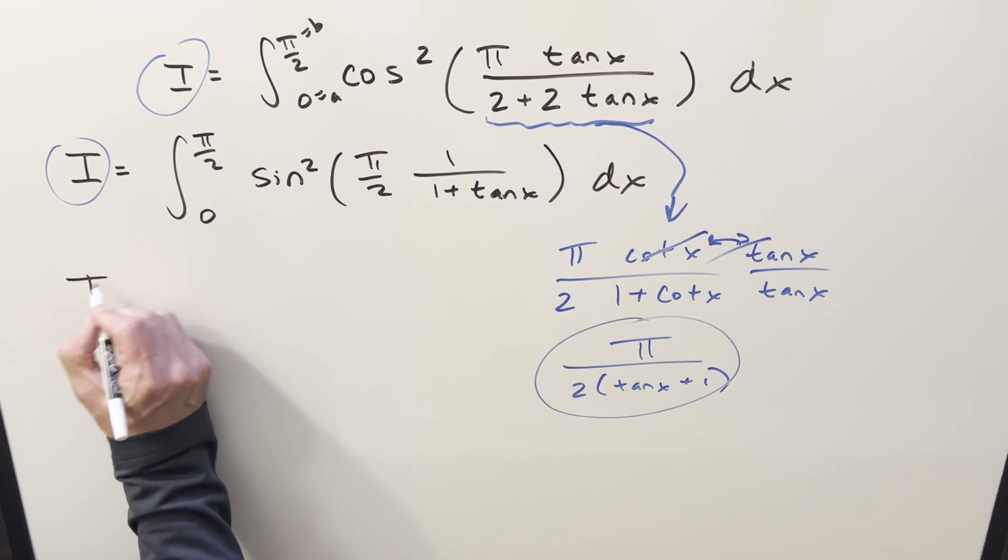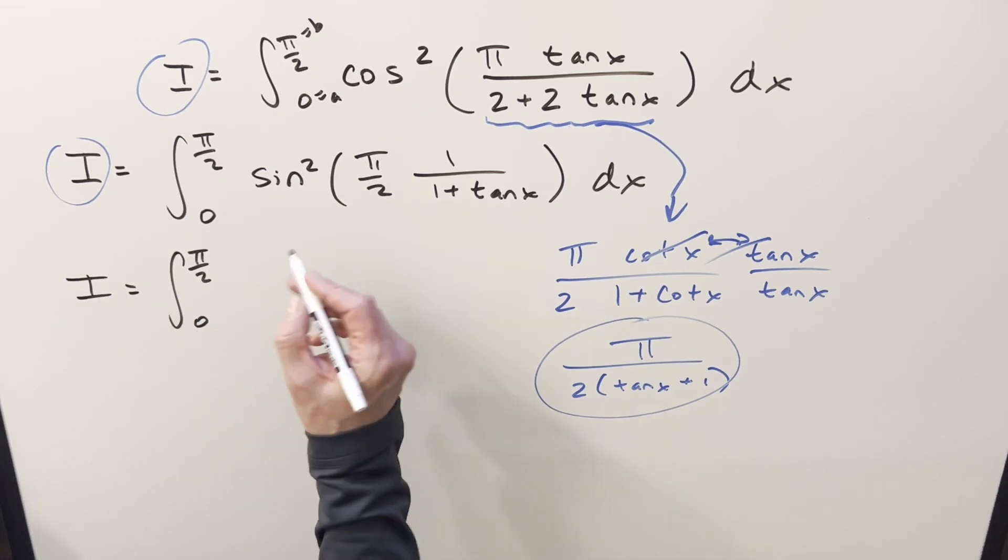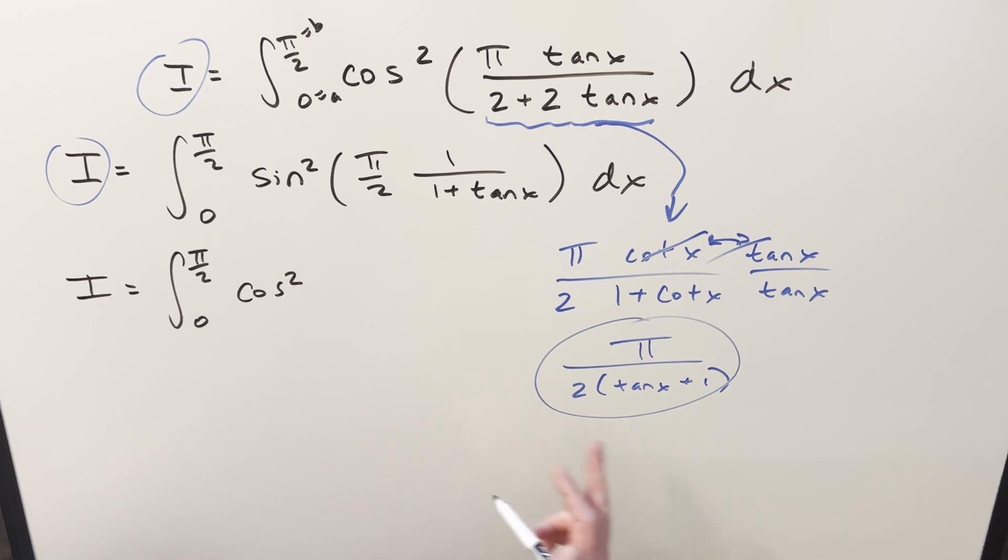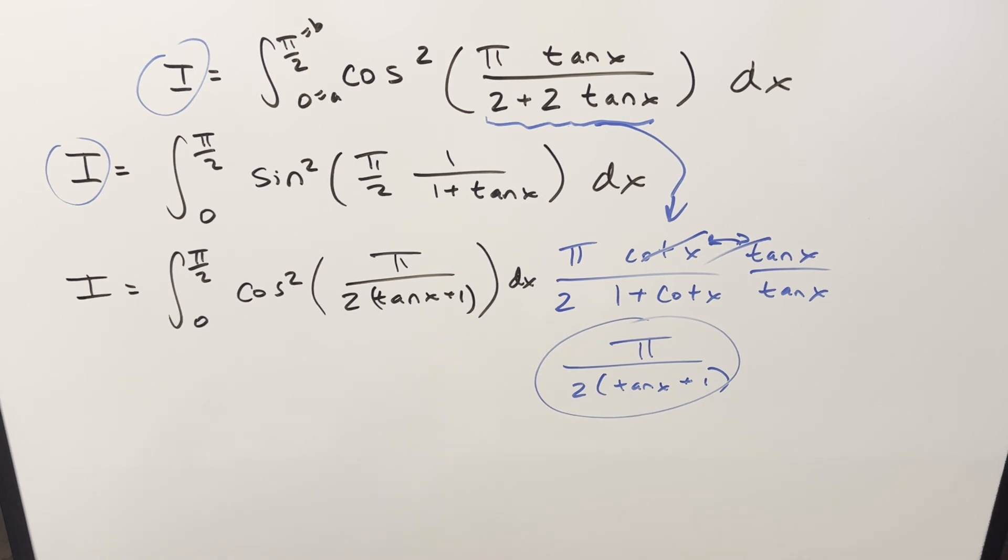What's going to happen is we've got another expression for i. Same bounds, nothing's changing really. We have cosines squared, but now we're inputting this right here. π/2 over tan x plus 1. But now what works well a lot for King's Principle is when we add the two integrals together, or two different versions. I guess we've got three versions. Let's add this one and this one here.